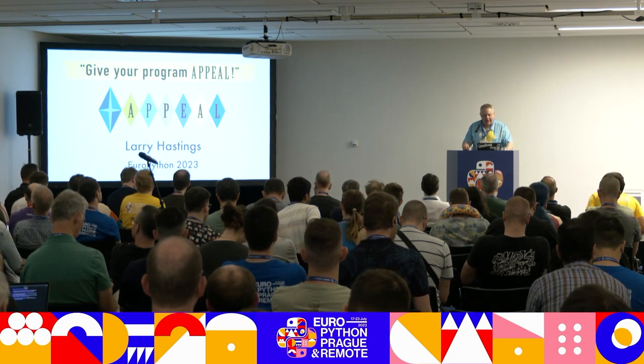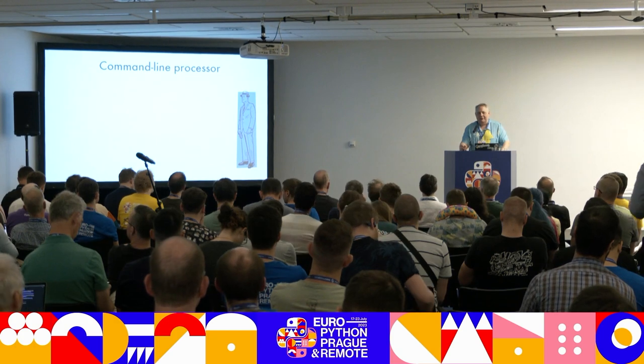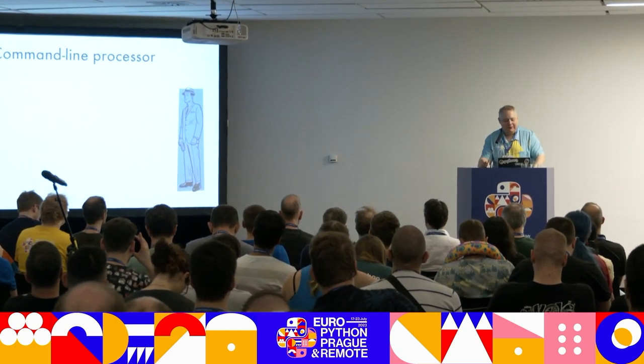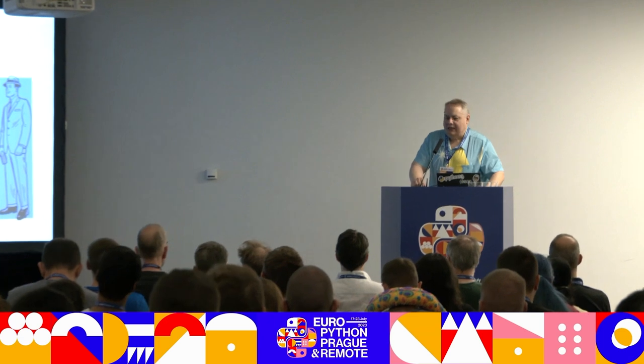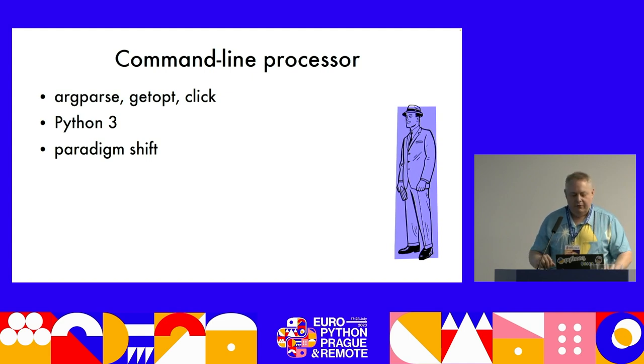This is 'Give Your Program Appeal.' My name is Larry Hastings. This talk is about a command line argument processing library, putting it in the same category as argparse, click, and getopt. But Appeal was designed for Python 3 and takes advantage of Python 3 expressive technologies like keyword-only arguments and annotations. I feel like it represents a rethink of the whole problem — a new, very different approach, a bit of a paradigm shift.